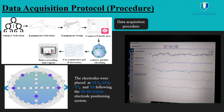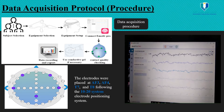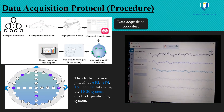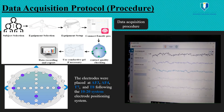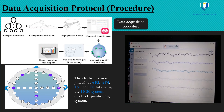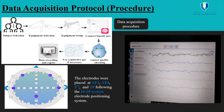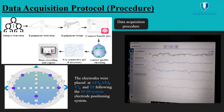We connect the device with a computer using the Emotiv Pro software via Bluetooth. During data collection, we check the contact quality, and if the contact quality is less than 100%, we use conductive gel, which helps to increase the contact quality between the skin and the sensor. Finally, we record and export the ABR dataset.